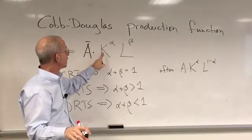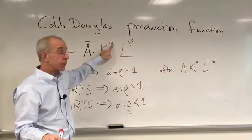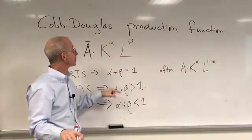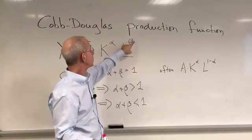Multiplied times the level of capital to the alpha power, so K to the alpha, times the amount of labor to beta.